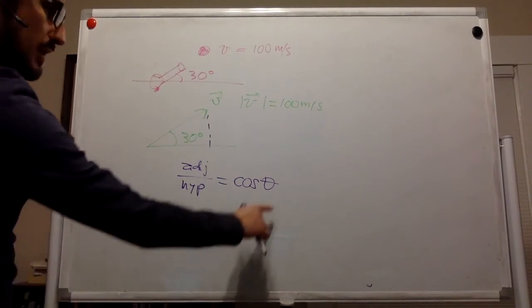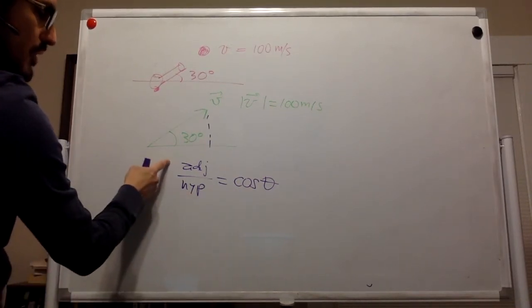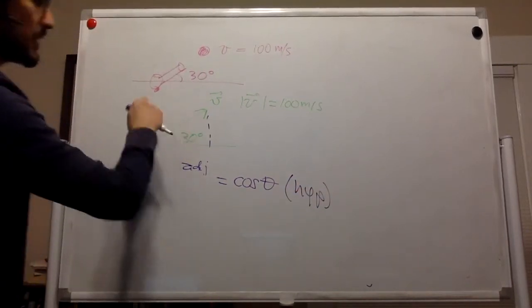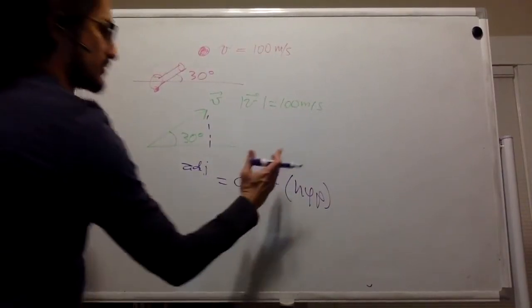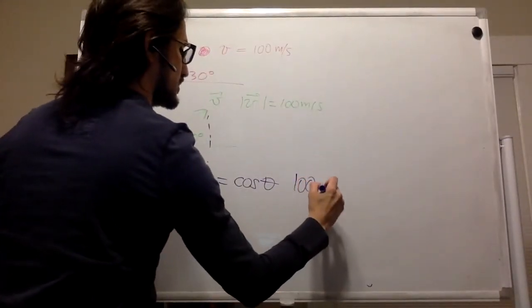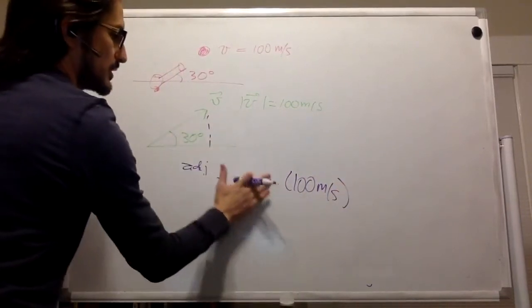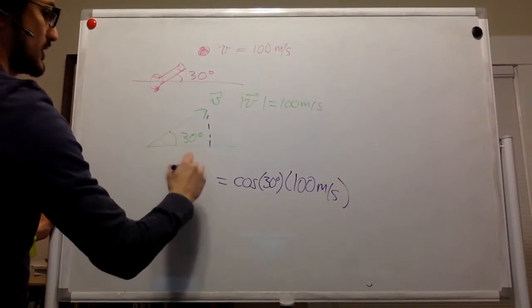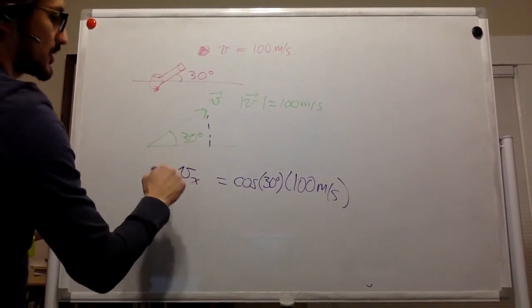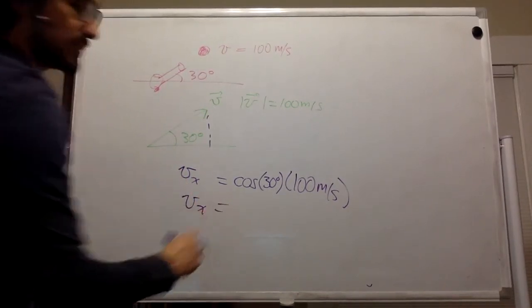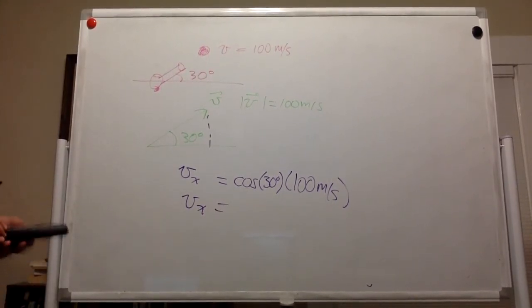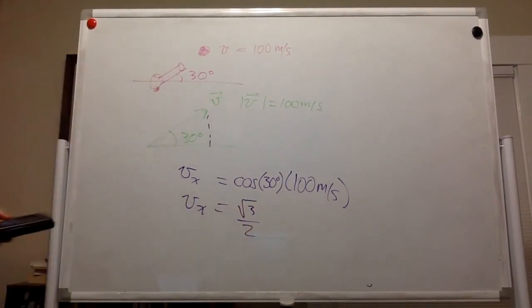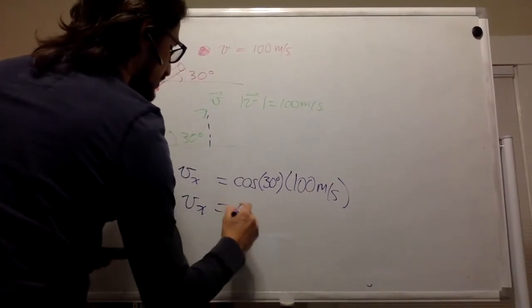We want the horizontal component and we have this angle, so we want the adjacent side to this angle. We know that adjacent over hypotenuse equals cosine of the angle — cosine 30. The angle is 30 degrees and we want to know the size of the adjacent, so we multiply by the hypotenuse. The hypotenuse is the magnitude of the velocity, so we put 100 meters per second. That gives us the adjacent, which is the horizontal or x-component of the velocity. Cosine of 30 degrees is square root of 3 over 2, also known as 0.866.